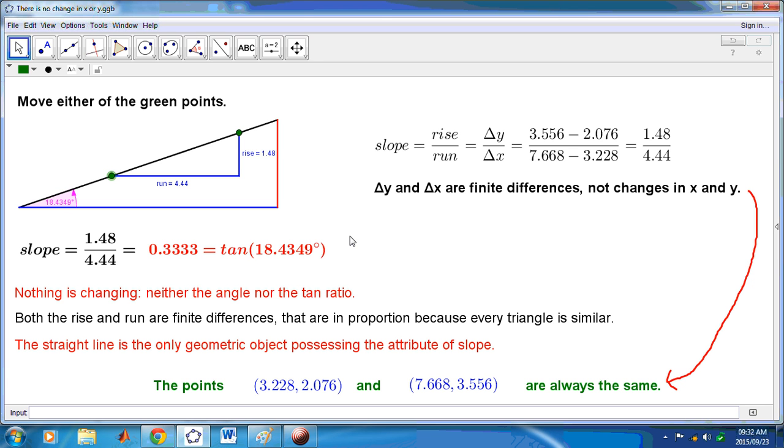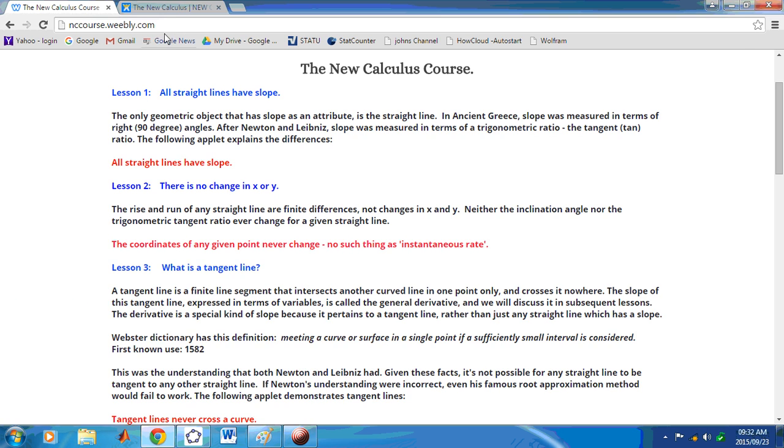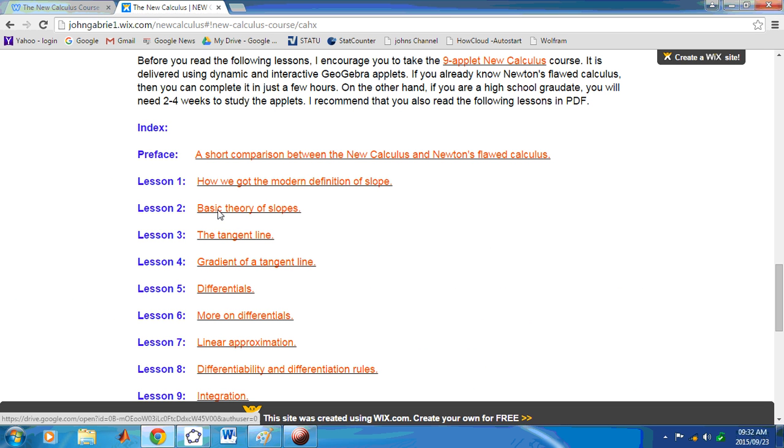So, that's the content of lesson two. You can also go to the new calculus site, the course site, and read up on the basic theory of slopes. And also how we got the modern definition of slope, which is covered in lesson one. And I also recommend that if you already know calculus, to read this article here, which is a preface, a short comparison between the new calculus and Newton's fluxion calculus, which will give you some insight into the rest of the lessons and where we're going from here.